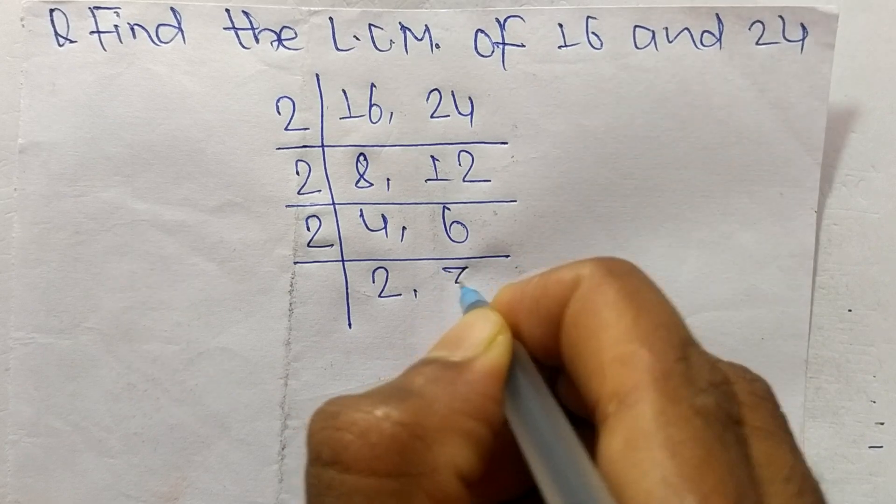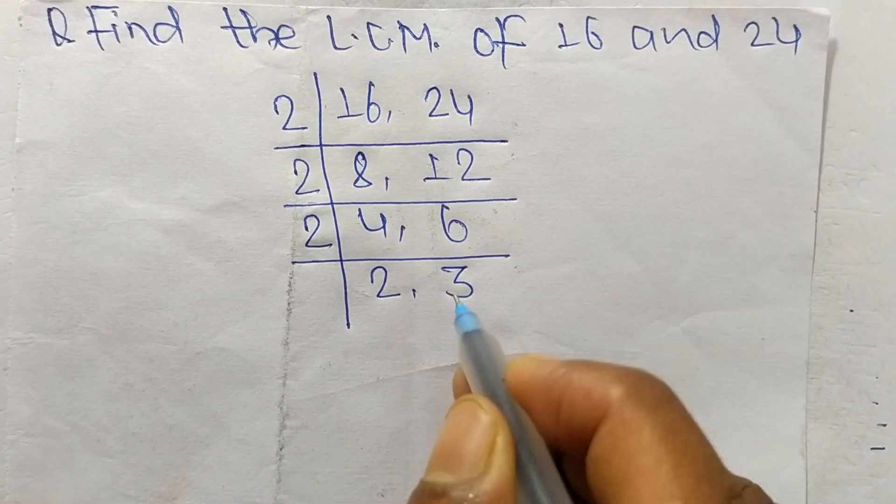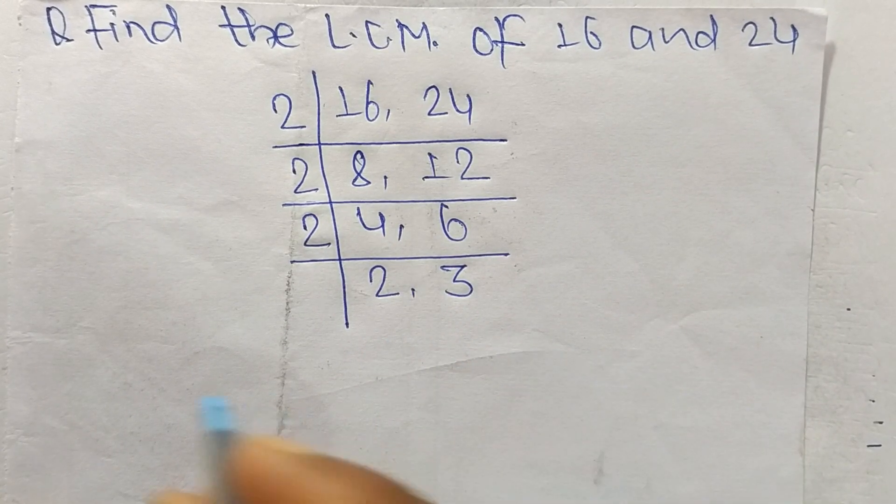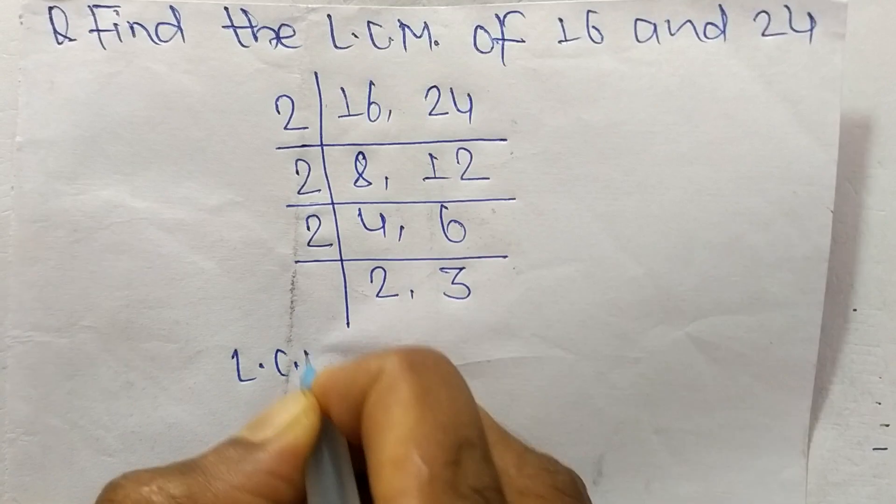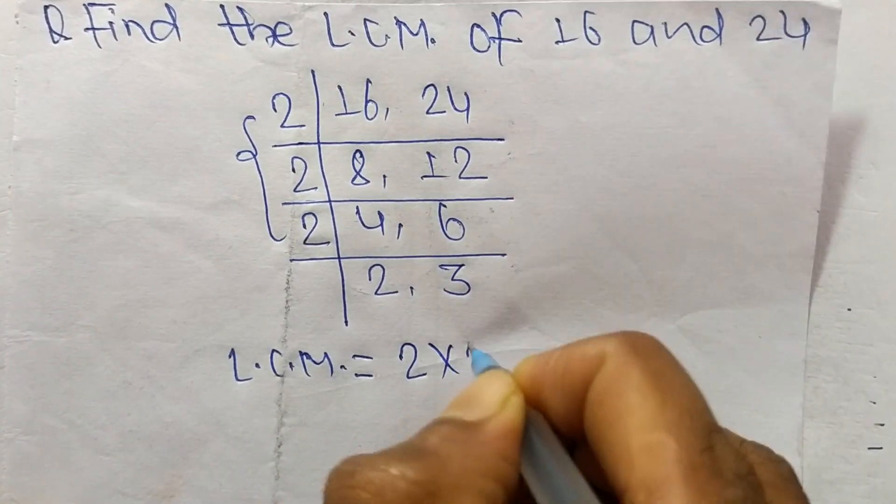2 times 2 mean 4, and 2 times 3 mean 6. So at last we have 2 and 3 which is not exactly divisible by the same number. So its LCM is equal to, from this part it is 2 times 2 times 2.